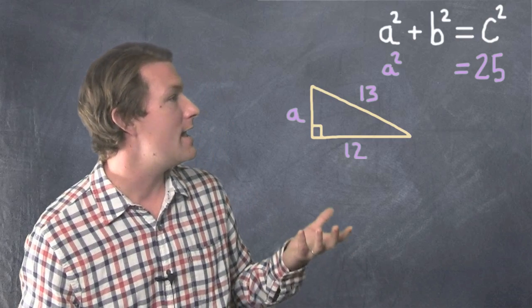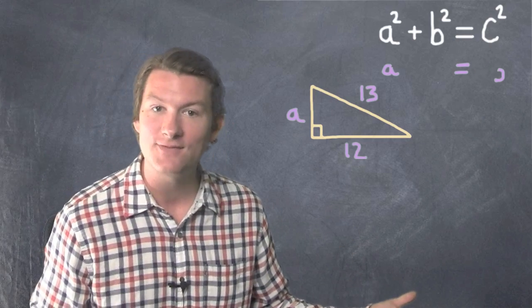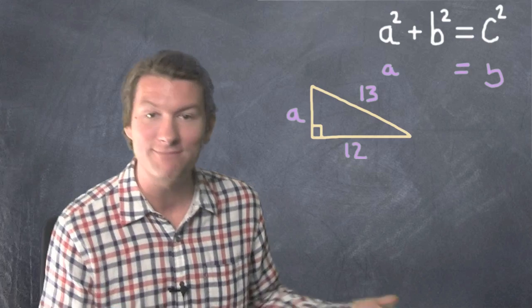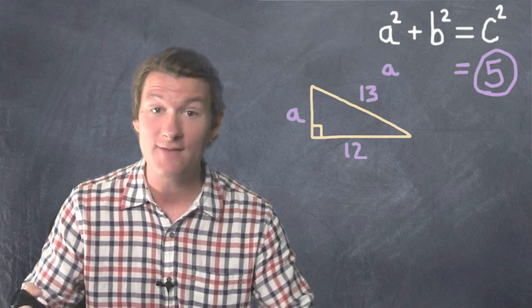So now we have a squared equals 25. If a squared equals 25, then a is just 5 because 5 times 5 is 25.